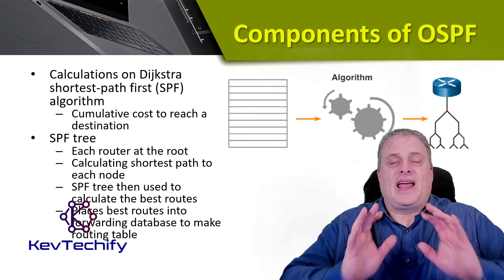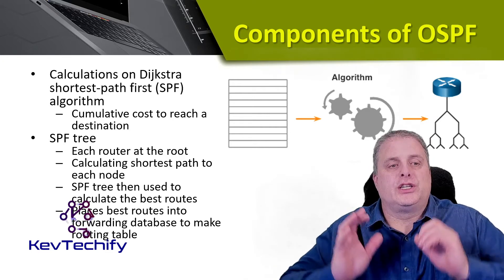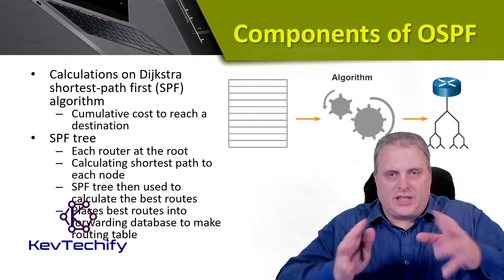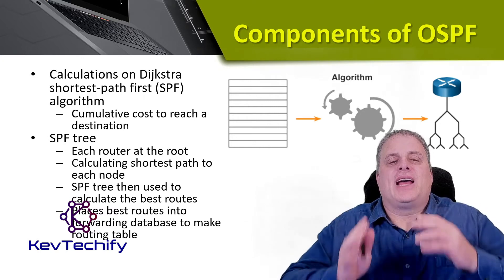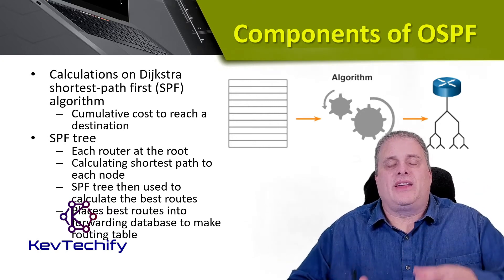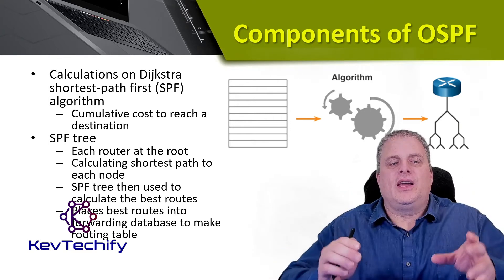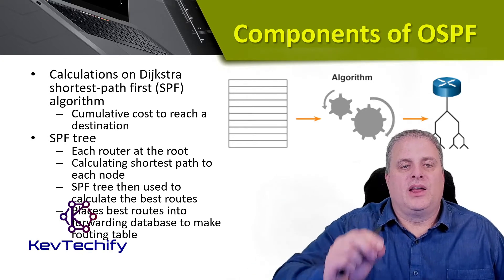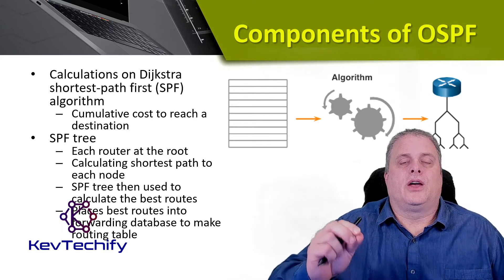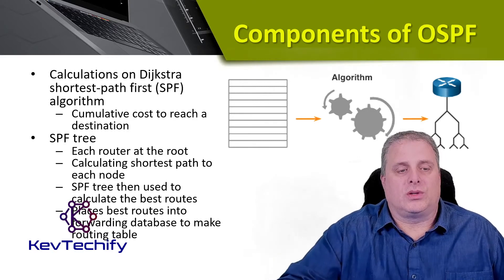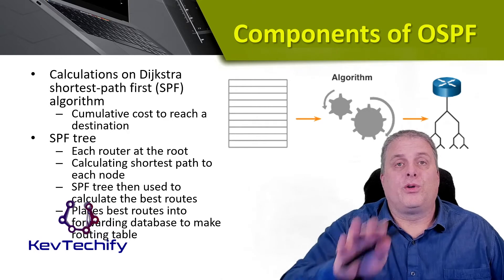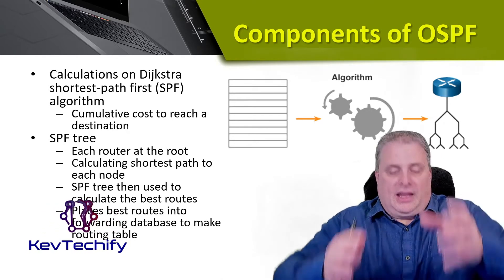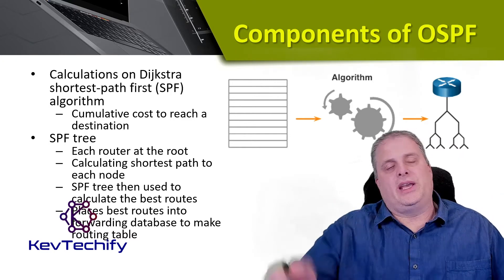The shortest path first algorithm creates a shortest path first tree. Each router creates its own tree with itself as the root, then calculates the shortest path to each node. That shortest path first tree is used to calculate the best paths. Because we have the cost to each node, we can calculate the best routes, put them into the forwarding database, and that forwarding database makes our routing table — which is what's used to route data across our networks.